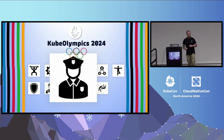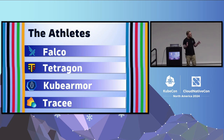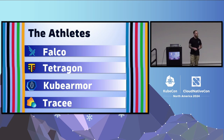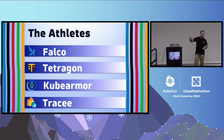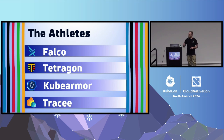Let's present the athletes of this super final. First is Falco, trained by the Sysdig teams. It's been out there for many years and has evolved with eBPF over time. The second competitor is Tetragon, coming from the Cilium dojo. It was born with eBPF — it embraces eBPF in everything it does, so it's very powerful.